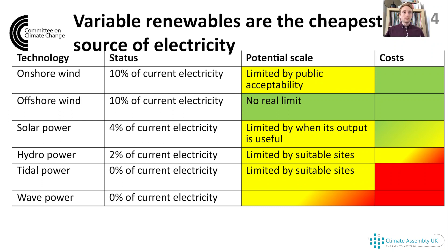Moving on to solar power. This has grown from 0% to around 4% of the UK's electricity on a similar timescale to onshore wind. Even though we might not be the sunniest country, there are currently around 800,000 households and businesses in the UK with solar panels on their roofs. The potential for solar power is high, probably as high as onshore wind. But there is a limit to how useful its output is, as it mostly produces electricity during the day in summer, whereas the UK needs most electricity on dark winter evenings. Panels in a field cost about the same as wind power, but panels on rooftops are a bit more expensive.